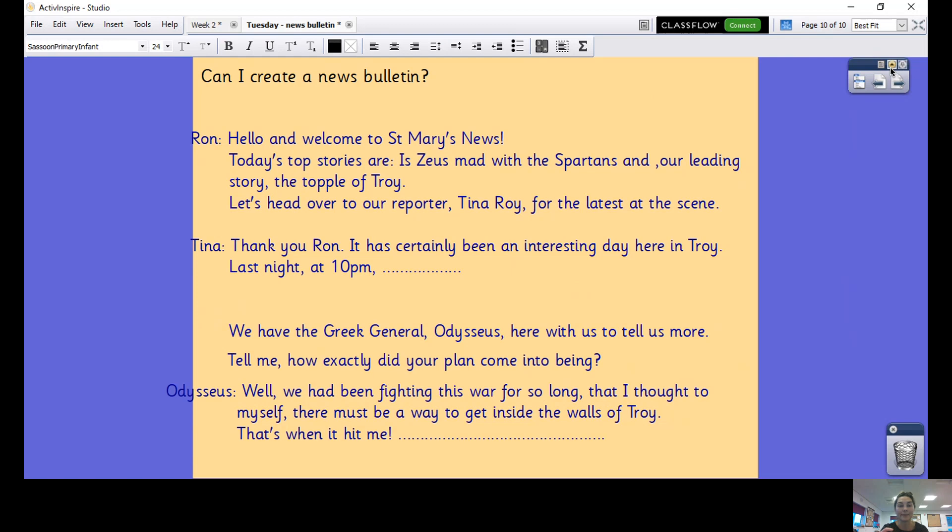Then she comes to her interview part. 'We have the Greek General Odysseus here with us to tell us some more. Tell me, how exactly did your plan come into being?' And then we've got Odysseus speaking: 'Well, we had been fighting this war for so long that I thought to myself there must be a way to get inside the walls of Troy, and that's when it hit me.' Then you could detail about his plan and his idea, and your reporter might ask him a few more questions or you might go to another eyewitness. It's completely up to you.